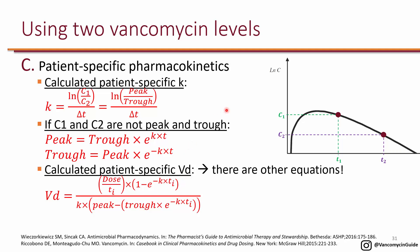Now let's look at patient-specific pharmacokinetics, where you actually get two levels from the patient. With two levels, you can calculate K directly using the first-order kinetic equation. C1 and C2 don't necessarily have to be a peak and trough — if they are, excellent; if not, you can extrapolate what the true peak and true trough are.